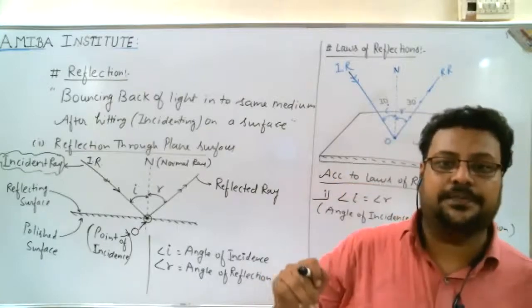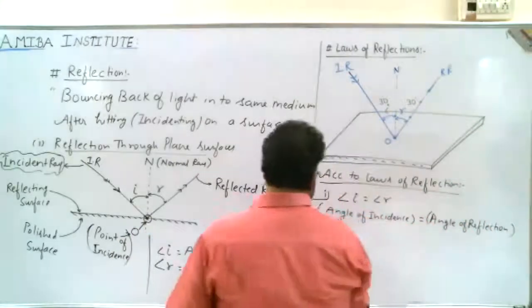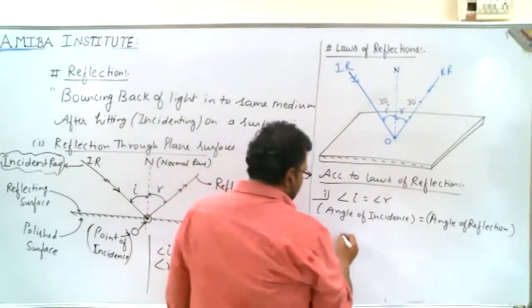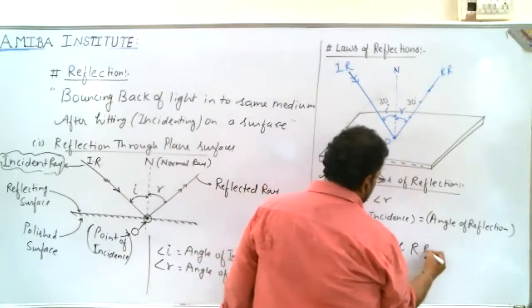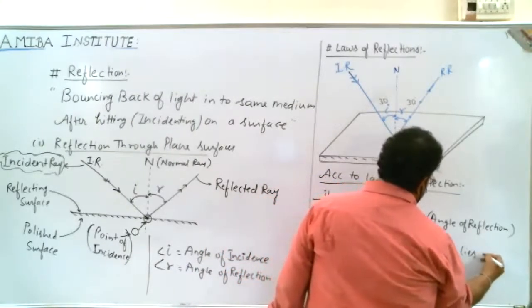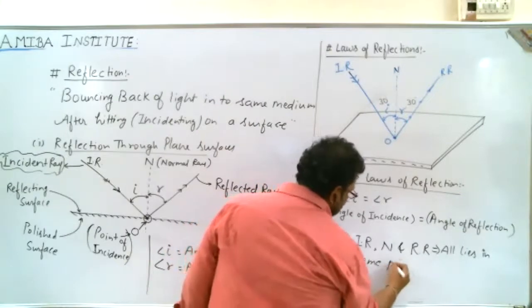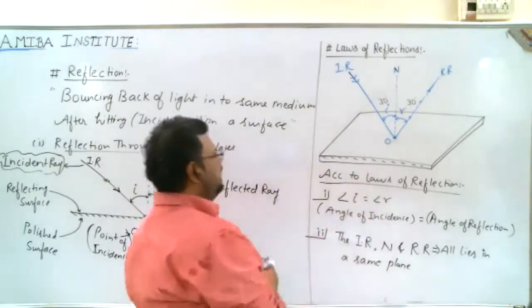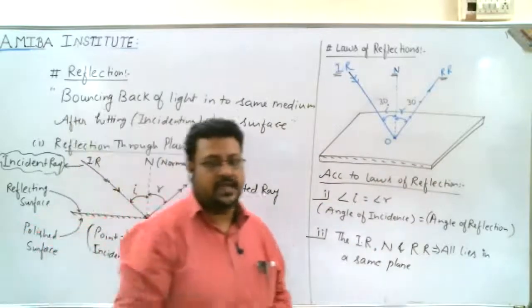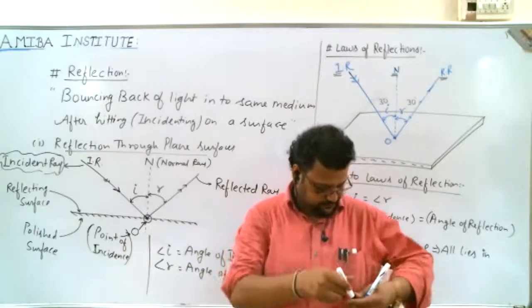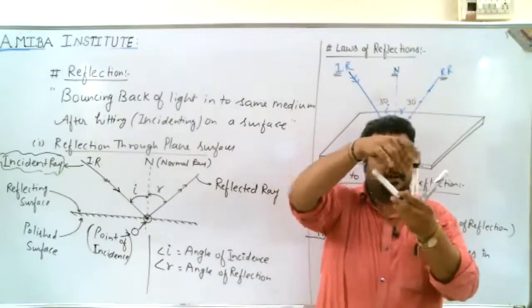The second law of reflection states that the incident ray, normal, and reflected ray all lie in the same plane. The incident ray hits and light bounces back, with the incident ray and normal all in the same plane.